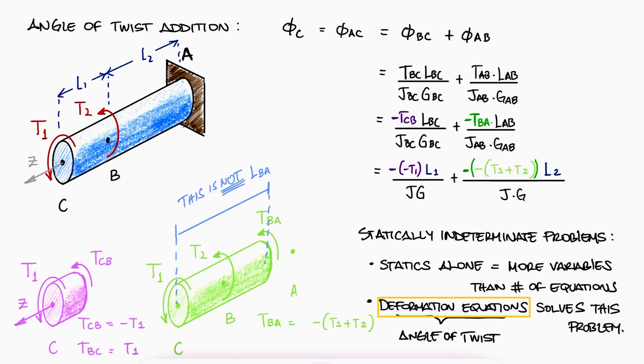So we use deformation information, in this case angles of twist, to find those torques required to calculate torsional shearing stresses. For statically indeterminate torsion examples, please check the links in the description of this video.